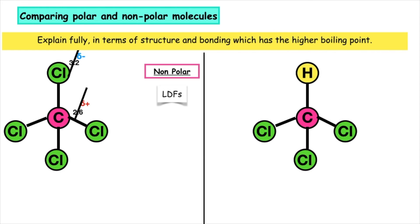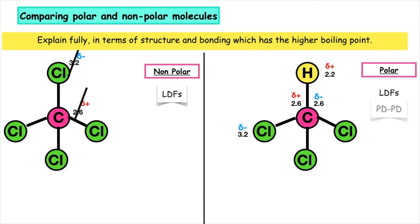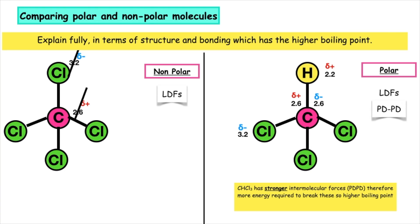For example two, carbon is 2.6, chlorine is 3.2, and hydrogen is 2.2, so there is a difference in electronegativity between the atoms in the bond. It is the tetrahedral shape, but looking at the atoms surrounding the central carbon, they are not all the same, so therefore this remains polar. This would have London dispersal forces and permanent-dipole–permanent-dipole interactions. CCl3H has stronger intermolecular forces — it has permanent-dipole–permanent-dipole interactions — so more energy is required to break these, giving a higher boiling point.